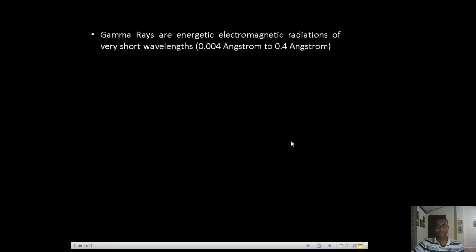Gamma rays are nothing but energetic electromagnetic radiations of very short wavelengths. Wavelengths can range from around 0.004 angstrom to around 0.4 angstrom. Short wavelengths basically means they are highly energetic electromagnetic radiations, meaning the energy of the photons of these electromagnetic radiations will be very high.